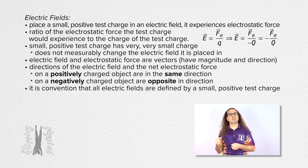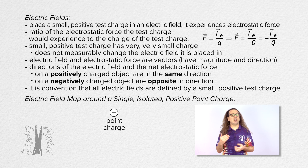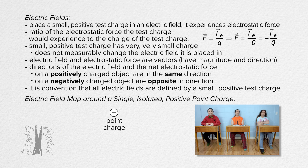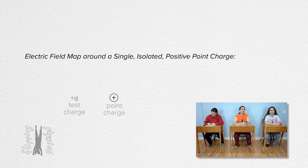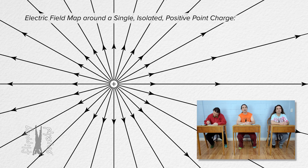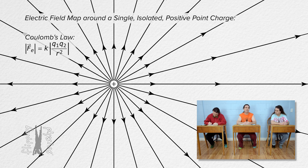Please tell me what the electric field map looks like around a single isolated positive point charge. When we take a positive test charge and place it near the positive point charge, according to the law of charges, because both charges are positive and therefore have the same sign, the positive test charge will be repelled from the positive point charge. That means no matter where we place the positive test charge, it will experience an electrostatic force radially outward from the positive point charge. According to Coulomb's law, the magnitude of the force will decrease as the positive test charge gets farther from the positive point charge.